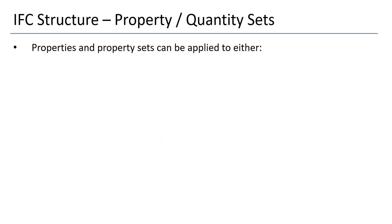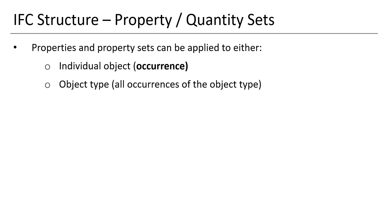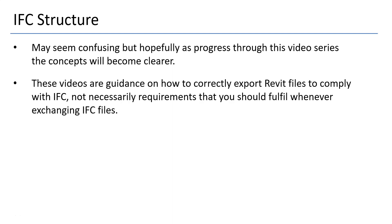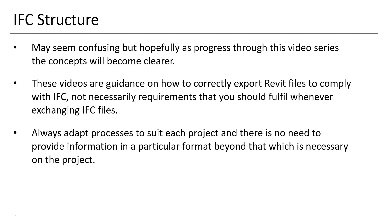Properties and property sets can be applied to either the individual object occurrence, the object type, or the occurrences of that particular object type. This may seem confusing, but hopefully as we progress through this video series the concepts will become a little clearer. These videos are guidance on how to set up your Revit content to ensure your Revit files comply with IFC once exported. Always adapt the processes to suit each project, and there is no need to provide information in a particular format beyond that which is necessary on the project.